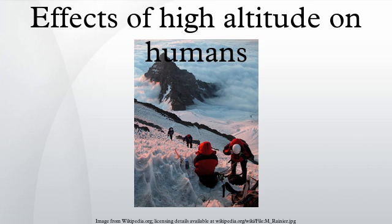Full acclimatization, however, requires days or even weeks. Gradually, the body compensates for the respiratory alkalosis by renal excretion of bicarbonate, allowing adequate respiration to provide oxygen without risking alkalosis. It takes about four days at any given altitude and can be enhanced by drugs such as acetazolamide. Eventually, the body has lower lactate production, decreased plasma volume, increased hematocrit, increased RBC mass, a higher concentration of capillaries in skeletal muscle tissue, increased myoglobin, increased mitochondria, increased aerobic enzyme concentration, increase in 2,3-BPG, hypoxic pulmonary vasoconstriction, and right ventricular hypertrophy.